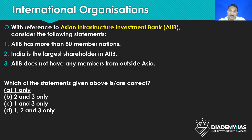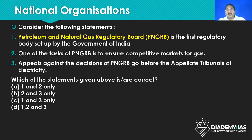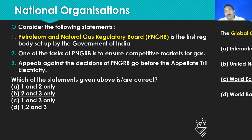Then international organizations — again very important. The questions are not very factual, but if you read international organizations with an analytical mindset, it is easy to solve them. National organizations — they are now asking questions from this area too, for example PNGRB. Even if you are not aware of the answer, if you try with the elimination technique and intelligent guessing, you can solve the questions.